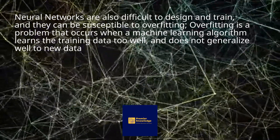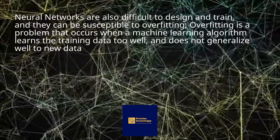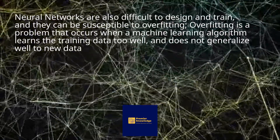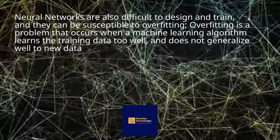Neural networks can also be susceptible to overfitting. Overfitting is a problem that occurs when a machine learning algorithm learns the training data too well and does not generalize well to new data.